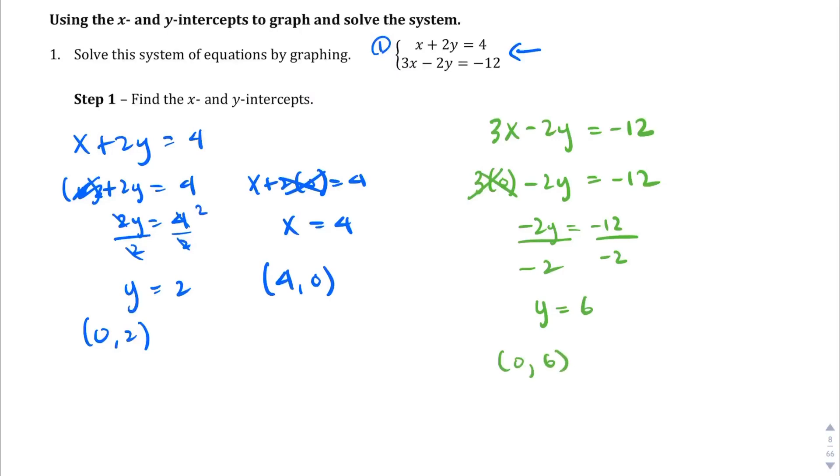And let's do the same thing for the x-intercept here. So, 3x - 2(0) = -12. This goes away. So, 3x = -12. Divide both sides by the coefficient of 3. We get x = -4. So, (-4, 0) is our other point. So, let's graph those.